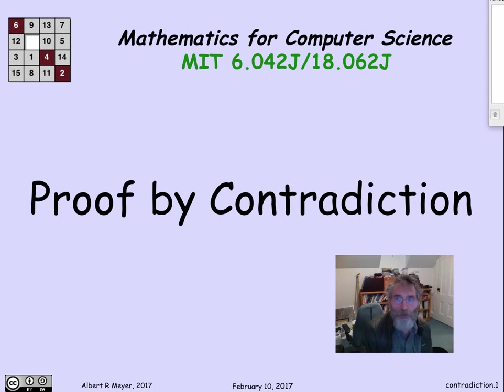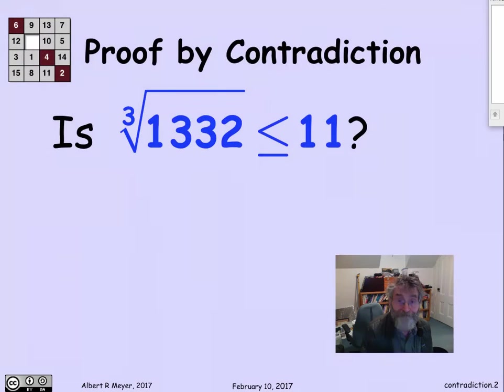So let's begin with an elementary example of proof by contradiction. Namely, I'm going to wonder if I could prove that the cube root of 1,332 was less than or equal to 11, or prove that it's not. How am I going to settle that? Well, I claim that it's not less than or equal to 11. And the way I'm going to prove that is by assuming that it is and then reaching an absurd conclusion. That's the basic idea of proof by contradiction.